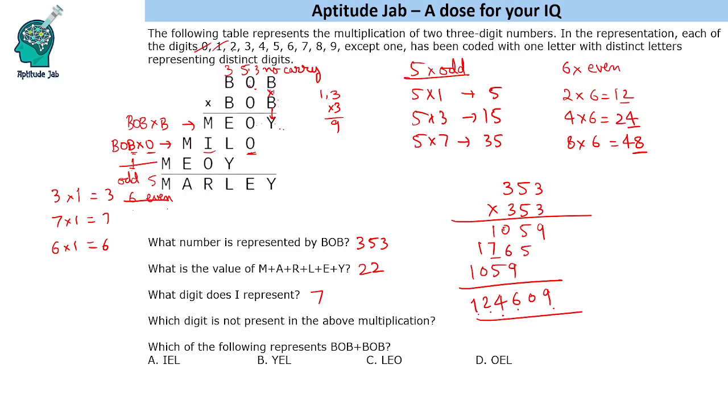One is also present. Two is also present. Three and five are already there. Four is also there. Six is there. Seven is also present. Nine is also present. Eight is missing. Eight is not present here.